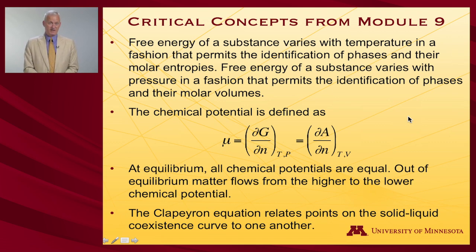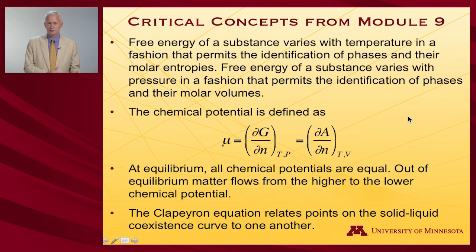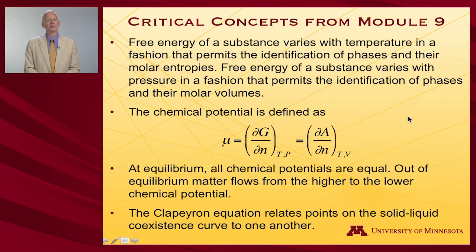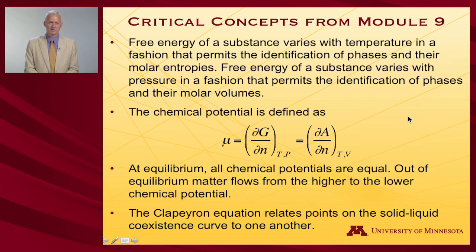The free energy of a substance varies with temperature in a way that lets you identify what phase is present and the molar entropy associated with that phase. There is a relationship between Gibbs energy versus temperature and phase diagrams. The slopes of those Gibbs energy versus temperature lines tell you about entropies. There is a similar relationship associated with variations in Gibbs energy with respect to pressure and volumes, and there are self-assessments to connect one to the other.